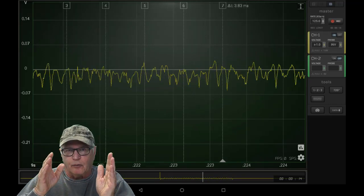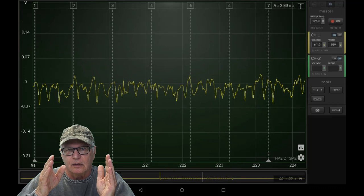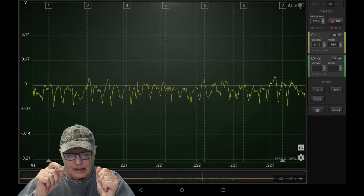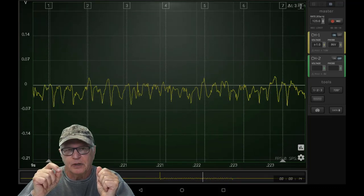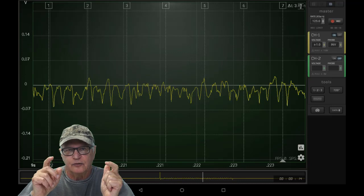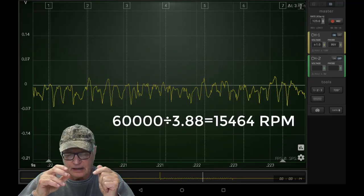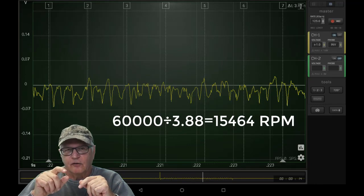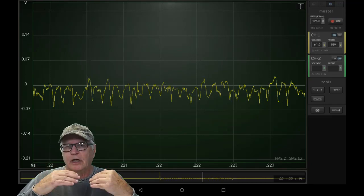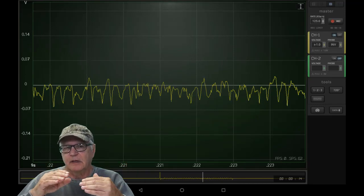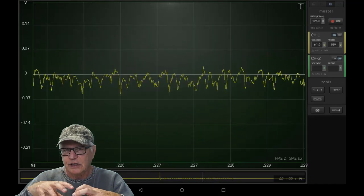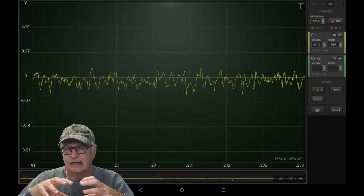That would represent one revolution of the armature, and it took 3.8 milliseconds to do that. 60,000 again divided by 3.8 is 15,464 RPM—that's the speed at which that armature is spinning. So now we're coming to what we were discussing at the very beginning of the video: to have an appreciation for what it is that we're actually seeing here.